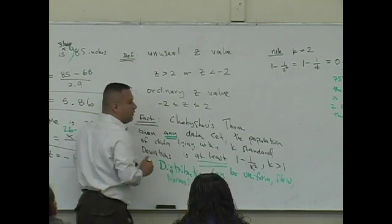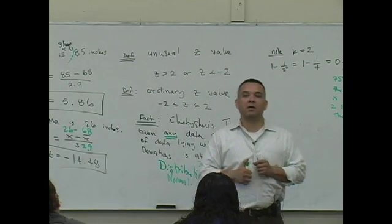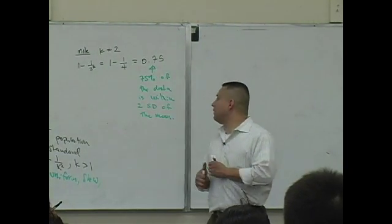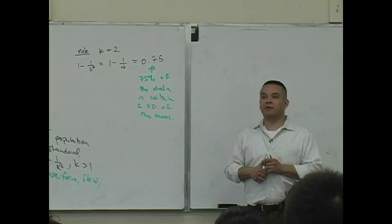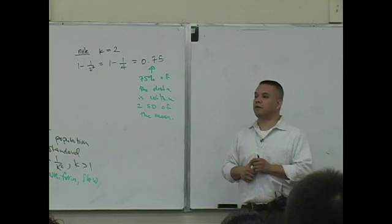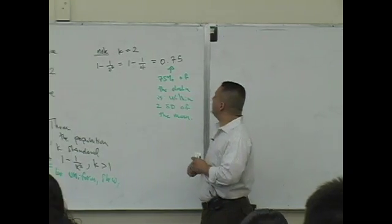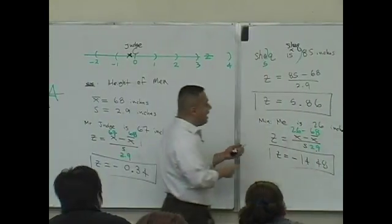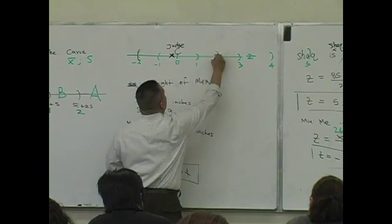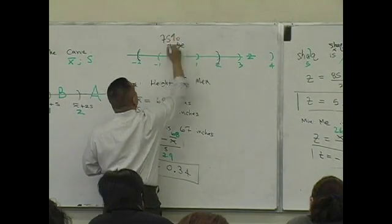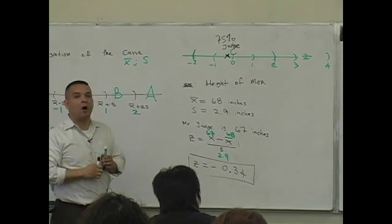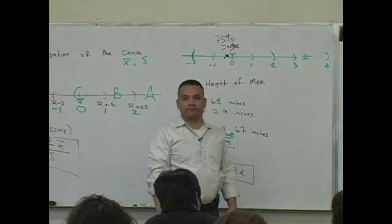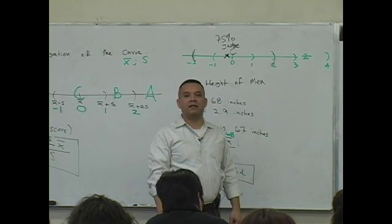What does 'at least' mean? If I say I'm going to give you at least four dollars, can I give you five? Can I give you six? Yes — two and up. So 75% of the data is within two standard deviations of the mean. Let's go back to this picture. If the setting is height, that means 75% of all men — because we're talking about men's heights — are within these two values. 75% of all men.